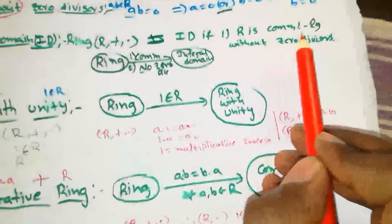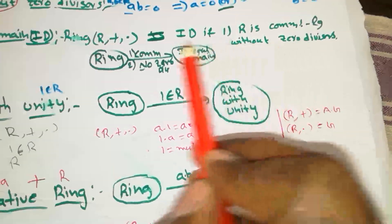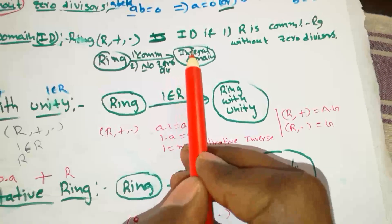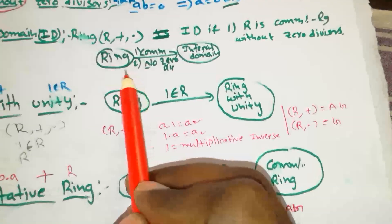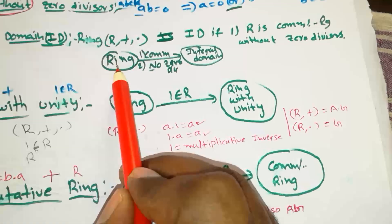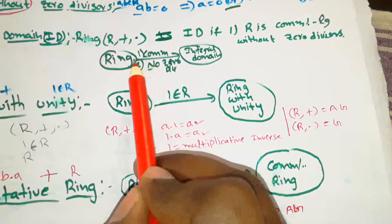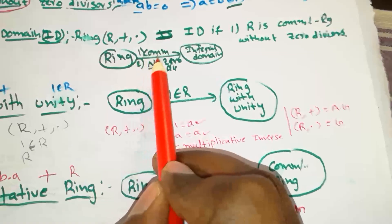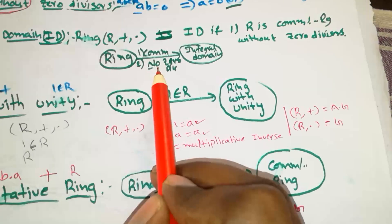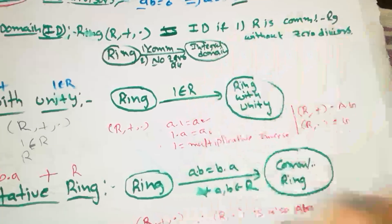A commutative ring without zero divisors is called an integral domain. So a ring is said to be an integral domain if it is commutative and without zero divisors.